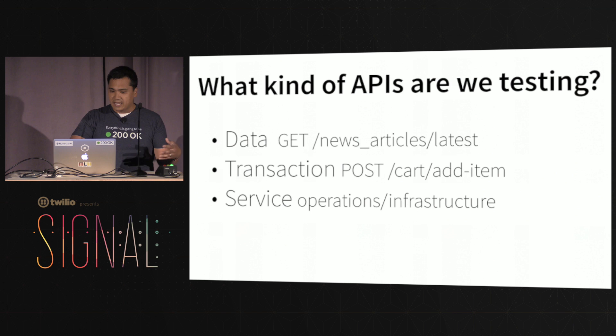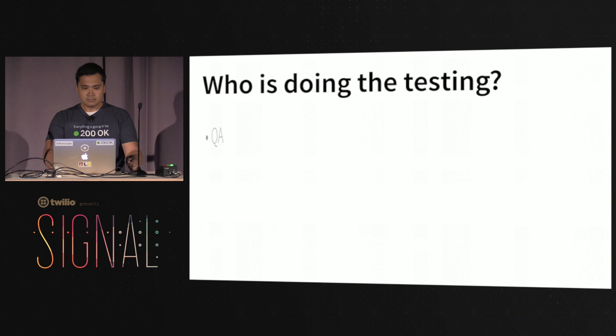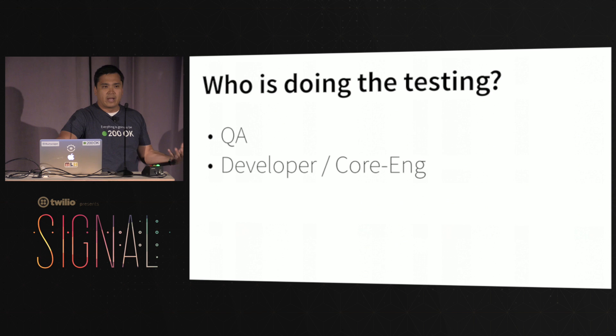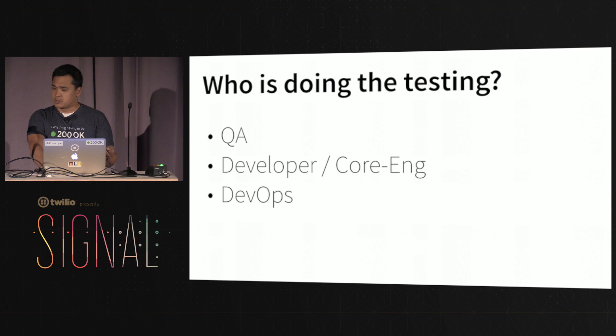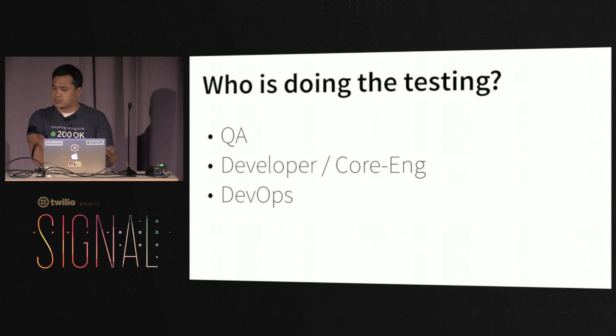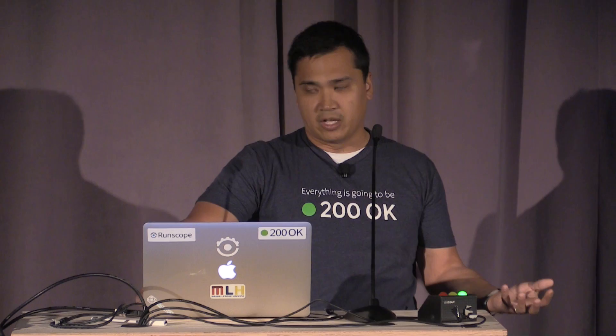These are the kinds of APIs I'm going to be talking about today. So who's doing the testing? I'm not a QA guy — I'm more of an engineer — but I'm meeting more QA people every day being at RunScope. We have very distinct audiences that do API testing: QA folk, developers, core eng — the people either developing or integrating APIs — DevOps folks making sure things are running and deploys are working, and even product owners and managers who aren't necessarily technical are starting to test APIs because there's tooling available.